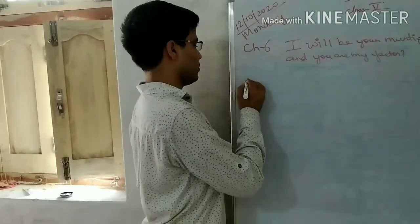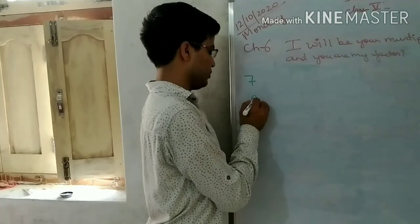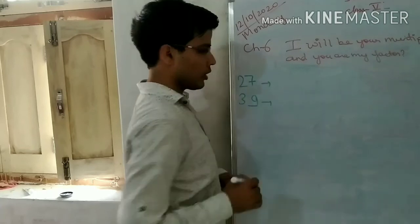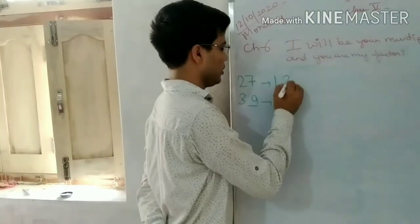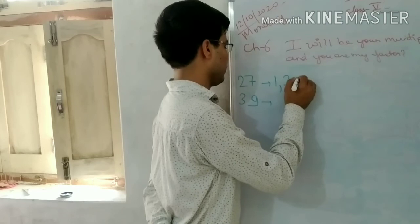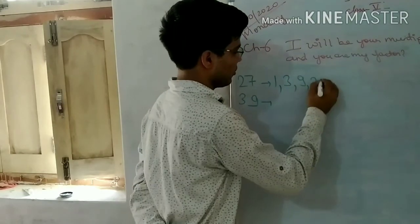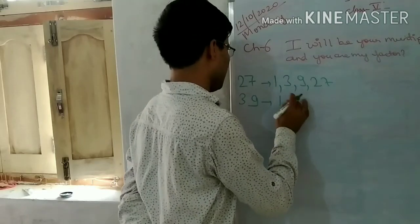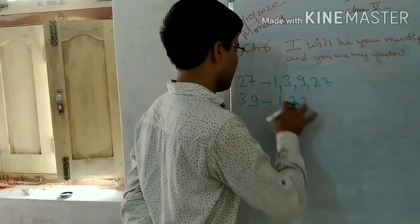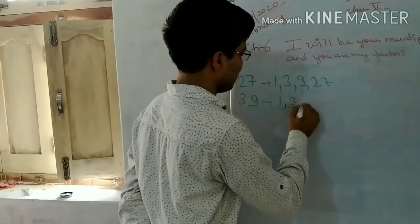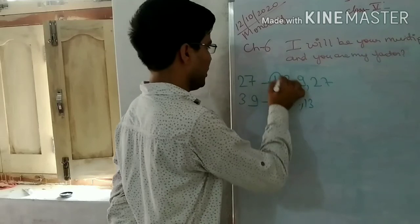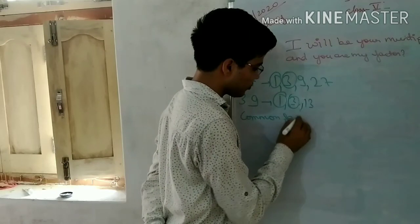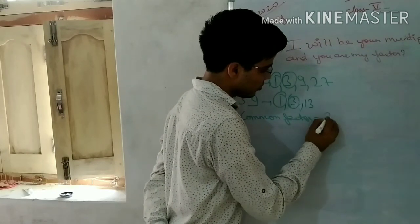For example, let's find the factors of 27 and 49. The factors of 27 are 1, 3, 9, and 27. The factors of 49 are 1, 7, and 49. What are the common numbers? The common factors are 1 and 3. In both cases, so the common factors become 1 and 3.